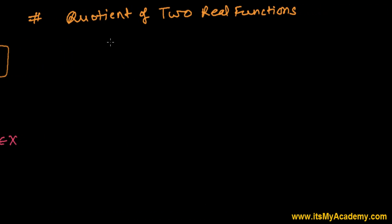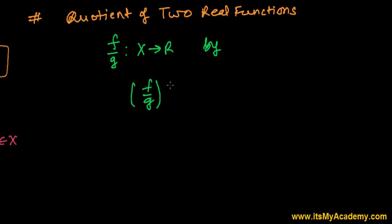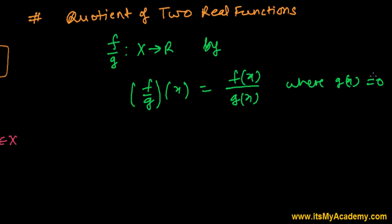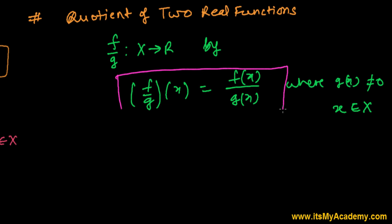So now I want to find the quotient, or ratio, of these two real functions f and g. We can define a new function from X to ℝ: (f/g)(x) = f(x) divided by g(x), where g(x) cannot be equal to zero. Every time, remember that x is a member of X — that subset of real numbers from which we have defined the functions.